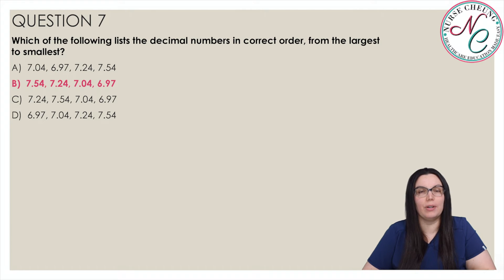In the set of numbers, the largest number is 7.54. It has a 7 in the ones place and a 5 in the tenths place. The other numbers with 7 in the ones place have smaller numbers in the tenths place.